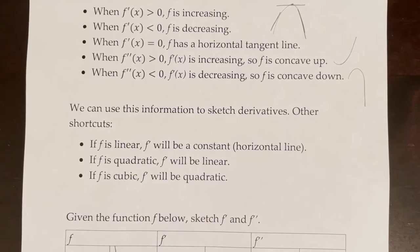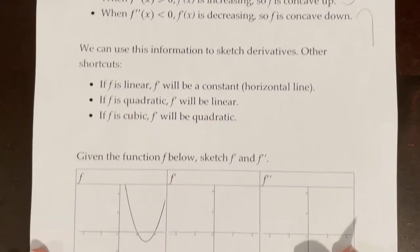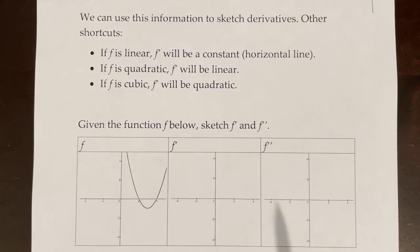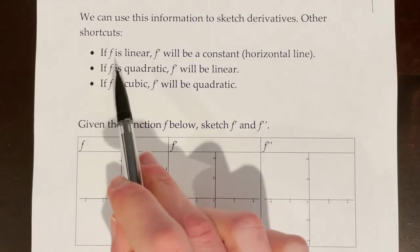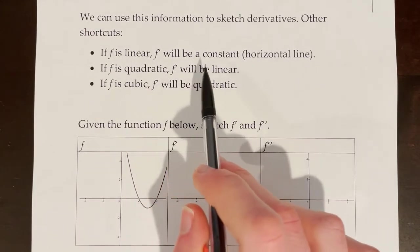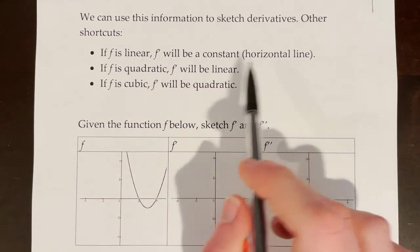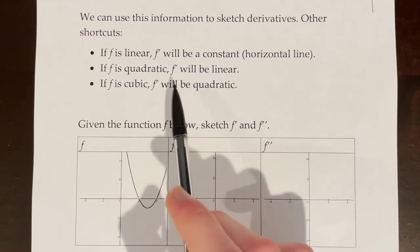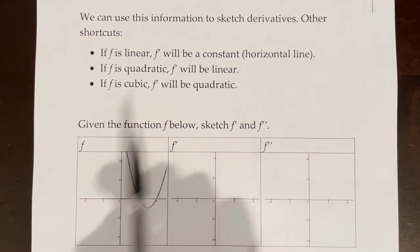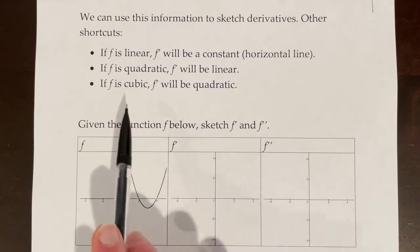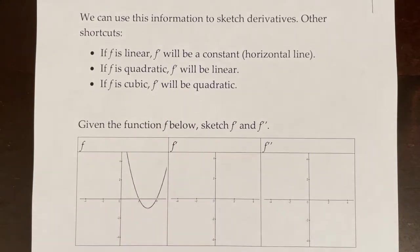We can use all of this information to sketch derivatives, and here are some other shortcuts that you can use that you probably already know. If the original function f is linear, f prime will be a constant — a horizontal line. If f, the original function, is quadratic, its derivative will be linear. And if the original function is cubic, the derivative will be quadratic.